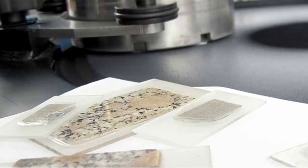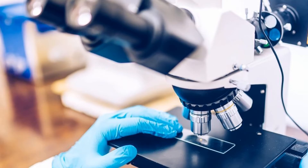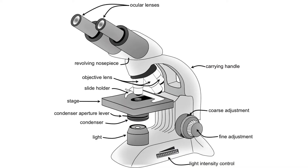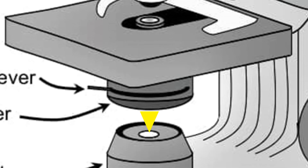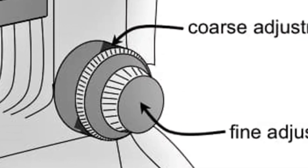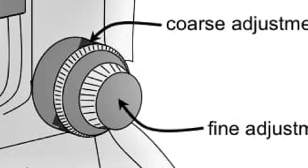We study petrographic thin sections with special geologic microscopes called petrographic microscopes. These have all the traditional features of compound transmitted light microscopes, plus additional features necessary for mineral identification. Like all compound microscopes, a petrographic microscope has a stage for holding the thin section, illuminated from below. The user can adjust the amount of light passing through using an aperture beneath the stage, and adjust focus with two knobs on the side.